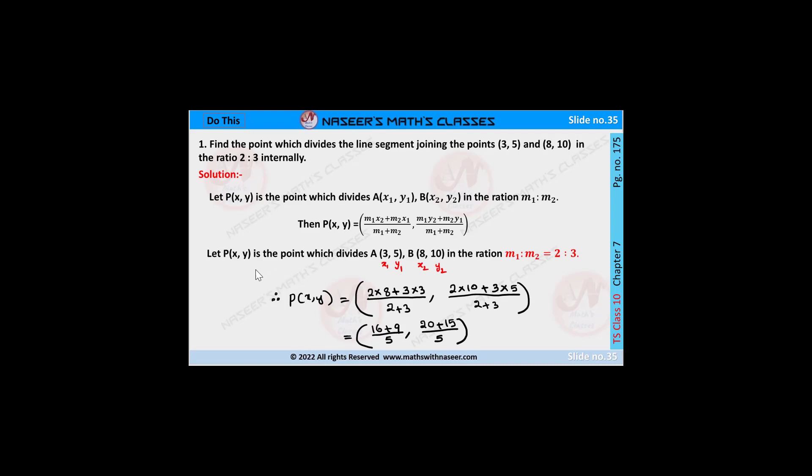If P is the required point which divides A(3,5) and B(8,10) in the ratio 2 to 3,